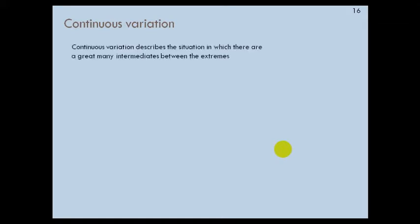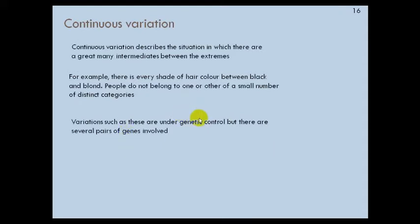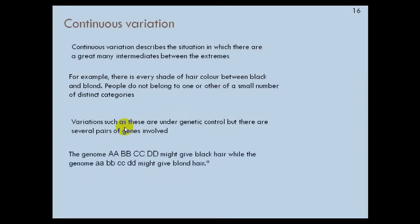For continuous variation, it describes the situation in which there are gradients of intermediate values between the extremes. For example, hair color — the shades of hair color between black and blonde. Variations like this are under genetic control, but several types of genes are involved.